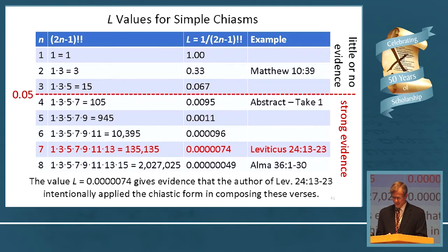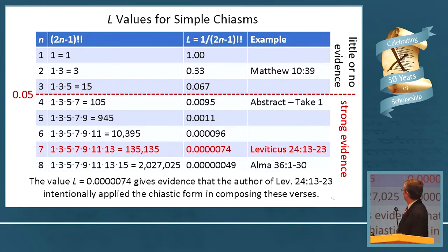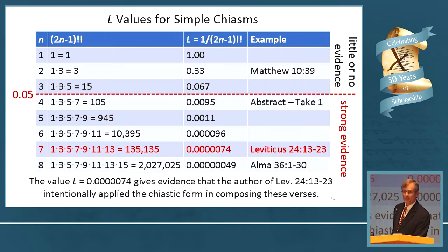How does this stack up statistically? For a seven-element chiasm: 1×3×5×7×9×11×13 = 135,135. One over that is a very small number. Is that less than 0.05? Yes it is, by a lot. So that means strong evidence of intentionality — that the author of this passage intentionally applied the chiastic form in composing these verses.